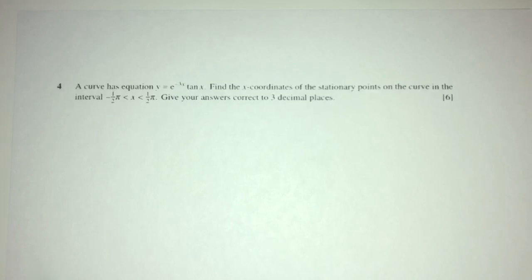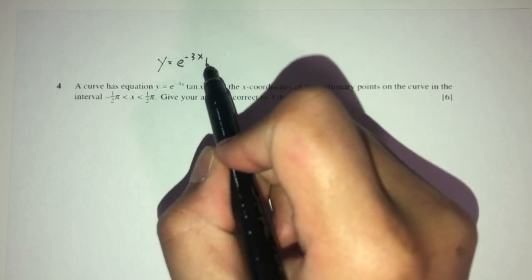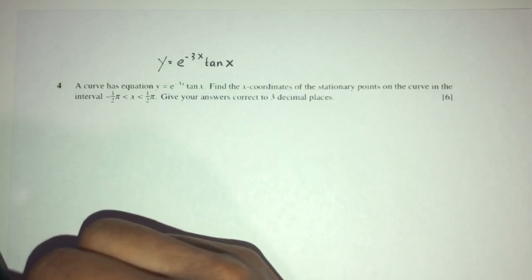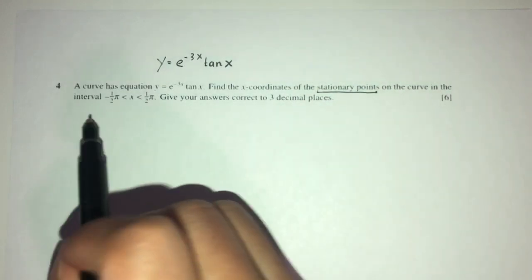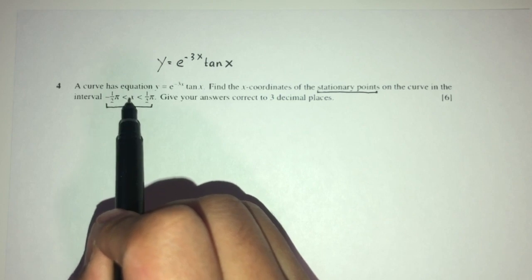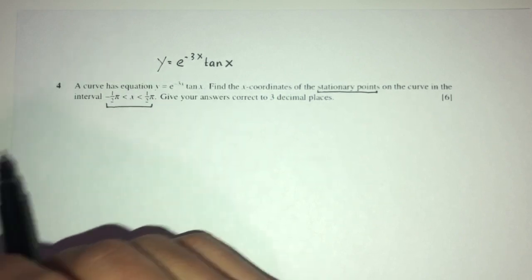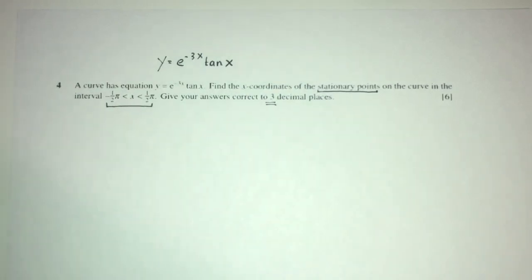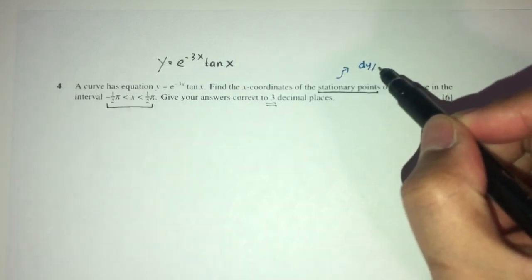Now, let's move on to question number 4. Here we have an equation of y equal to e to the minus 3x times tan x. We have to find the x coordinates of the stationary points on the curve in this interval. You have to be careful — x goes to negative values and positive values as well. Giving you answers correct to 3 decimal places. At stationary points, dy/dx has to equal 0.